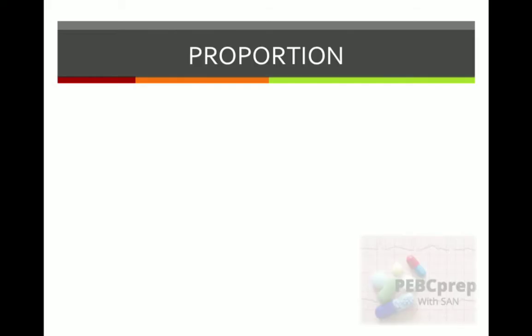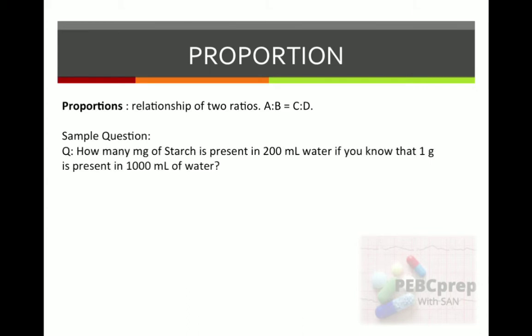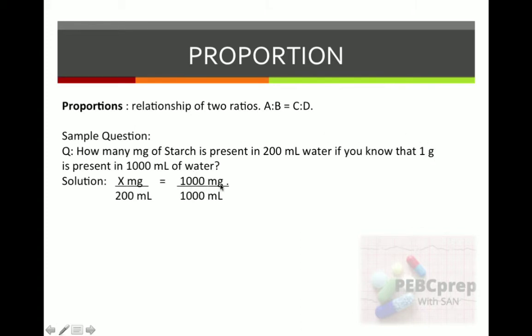Now, proportion — we already know it is the relationship of two ratios: A is to B equals C is to D. Sample question: how many milligrams of starch are present in 200 ml, if one gram is present in 1000 ml of water? The answer must be in milligrams. X mg over 200 ml = 1000 mg over 1000 ml. X = 200 × 1000 ÷ 1000 = 200 milligrams.